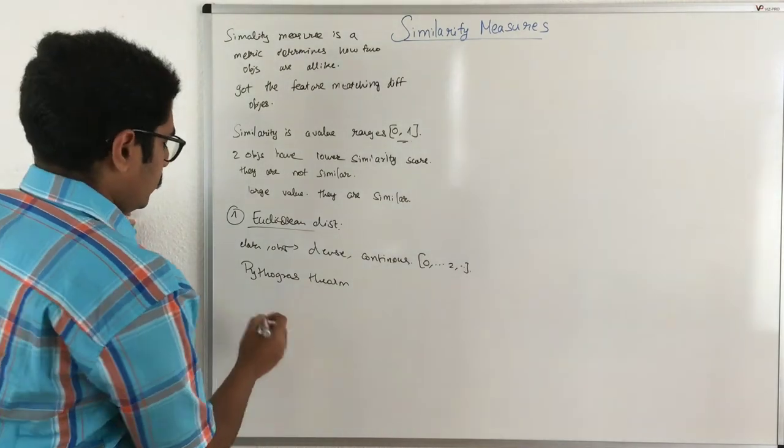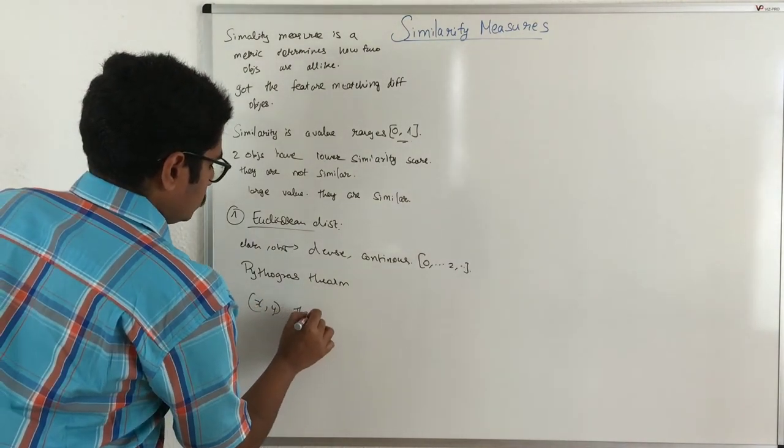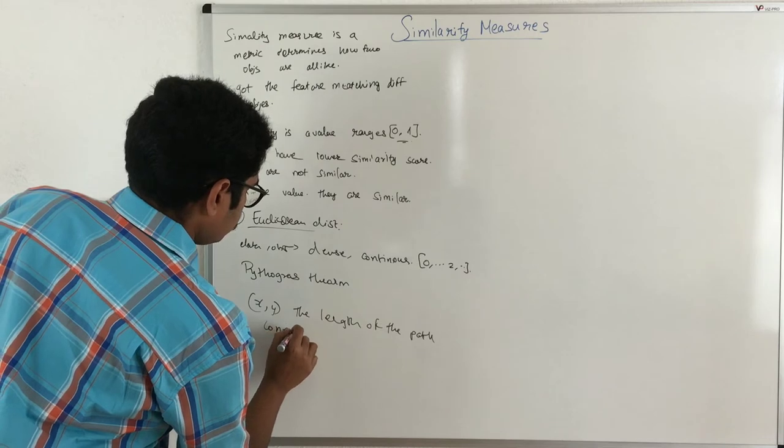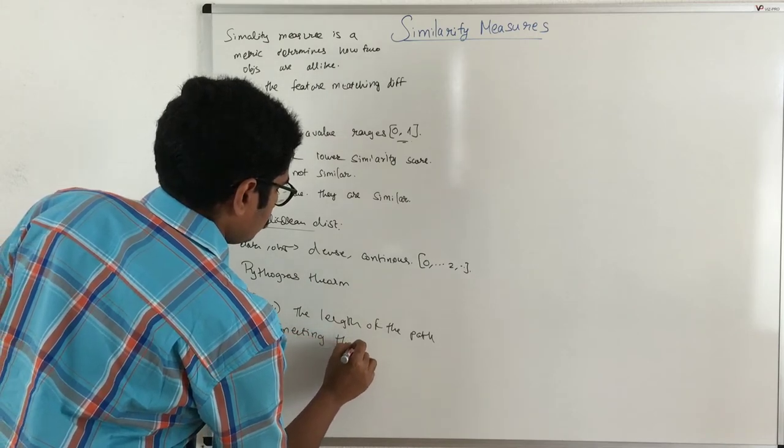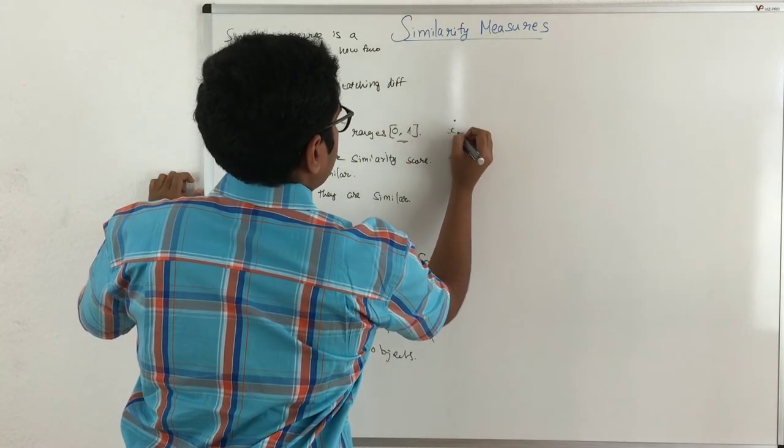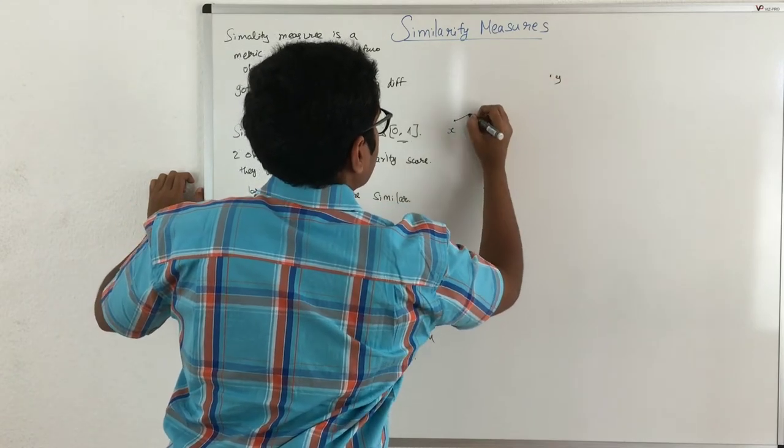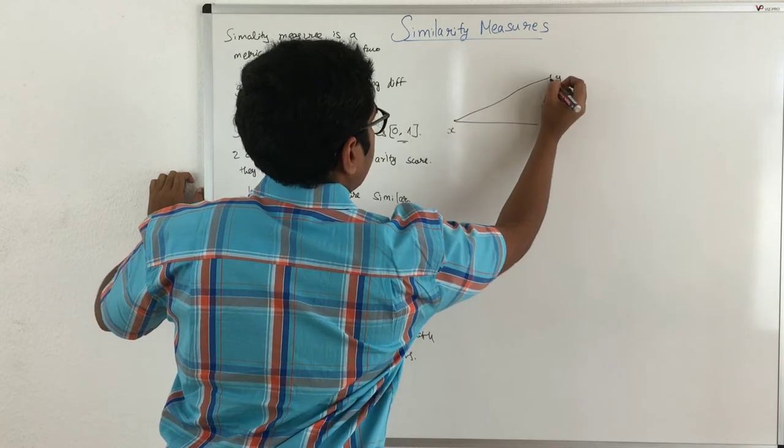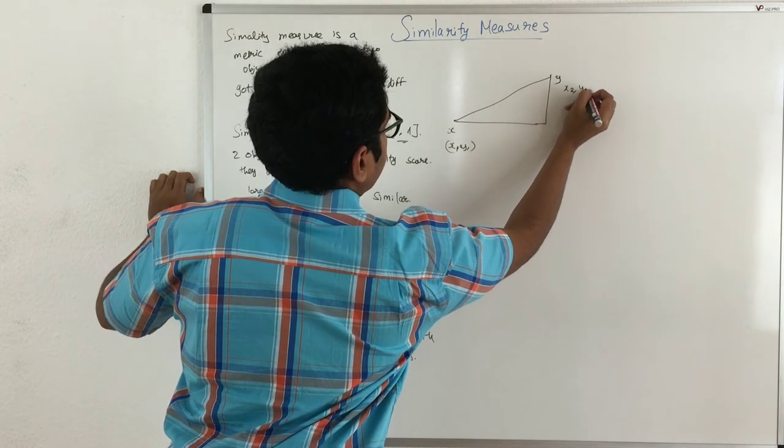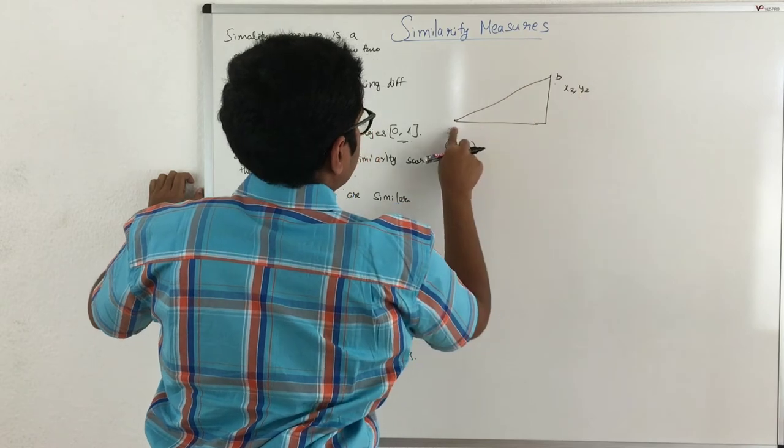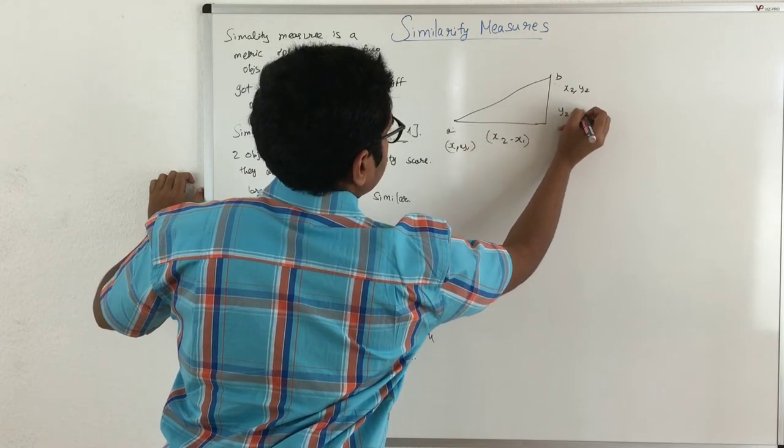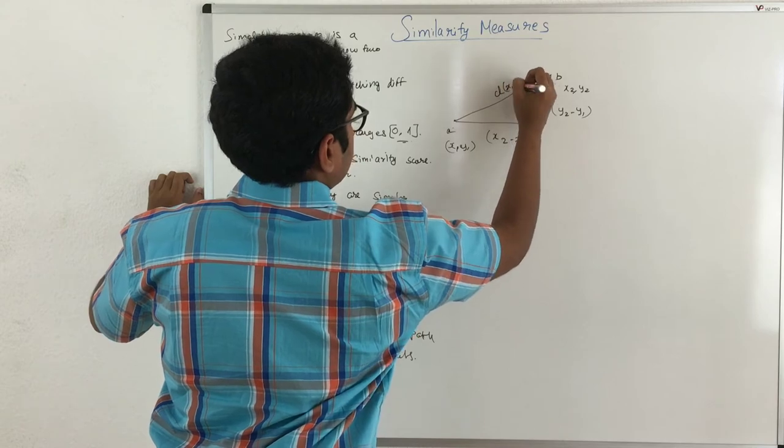So Euclidean distance between any two points, say we have X and Y, is the length of the path connecting these objects. Say for instance, I have this point, say this is X and this is Y. Now this is the length that connects these two. Say this has coordinates X1 and Y1 and this has X2, Y2. So this horizontal distance is X2 minus X1 and this will be Y2 minus Y1. So this distance is the Euclidean distance.